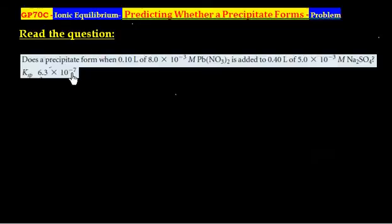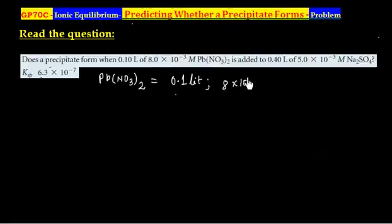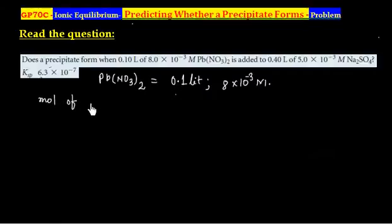We have been given a mixture of lead nitrate and sodium sulfate and we have to determine whether a precipitate will take place or not. We can calculate the moles of lead nitrate, that is molarity times volume.